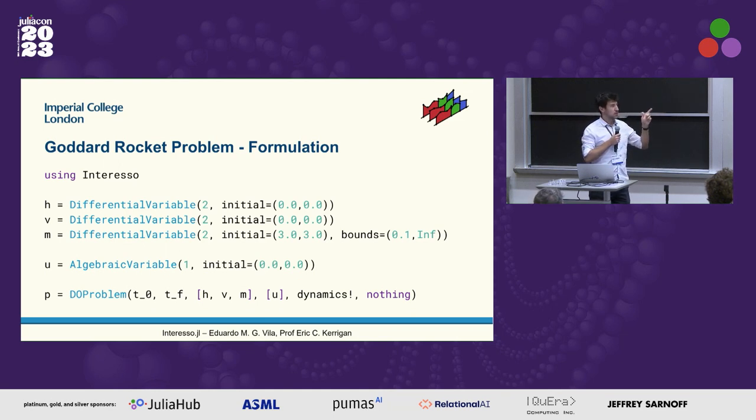In the case of the mass, we apply bounds. Otherwise the bounds are from minus infinity to infinity. And then you have the thrust input U, which is an algebraic variable here with its own initial condition.